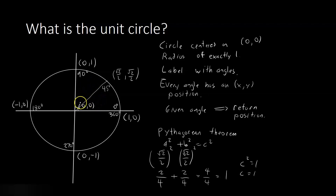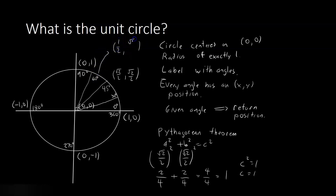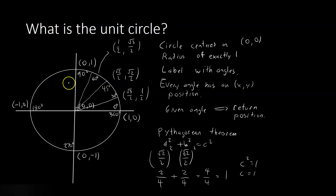Some other numbers that tend to come up fairly often are 60 degrees and 30 degrees. At 60 degrees, our position is going to be (1/2, √3/2). At 30 degrees, our position will be (√3/2, 1/2). They're simply mirror images of each other. Now, there are other angles within the rest of the circle that tend to come up fairly often as well. In the next episode, I'll show you how to get the values for those — they're very similar to the values we already have. Thanks for watching.